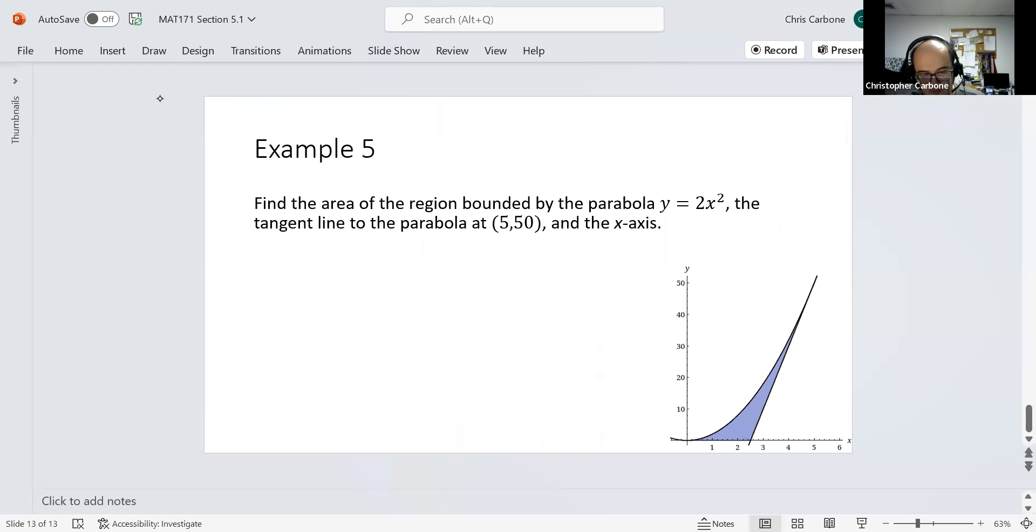And we have one more example. Find the area of the region bounded by the parabola y equals 2x squared, the tangent line to the parabola at (5,50), and the x-axis. We need that tangent line equation.